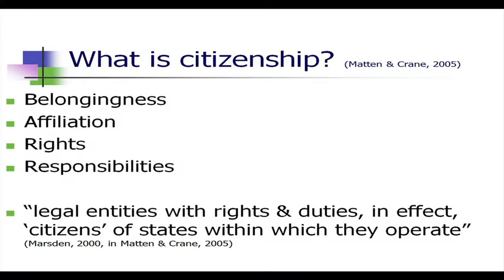A formal understanding of citizenship comes from a statement by Marston, cited in Madden and Crane's paper published in 2005. The statement is: citizenship refers to legal entities with rights and duties - in effect, citizens of states within which they operate. We function in a particular environment and our identity is a function of the setting we belong to. We have certain rights by virtue of being connected to that place, and we also have duties and responsibilities to maintain that relationship.